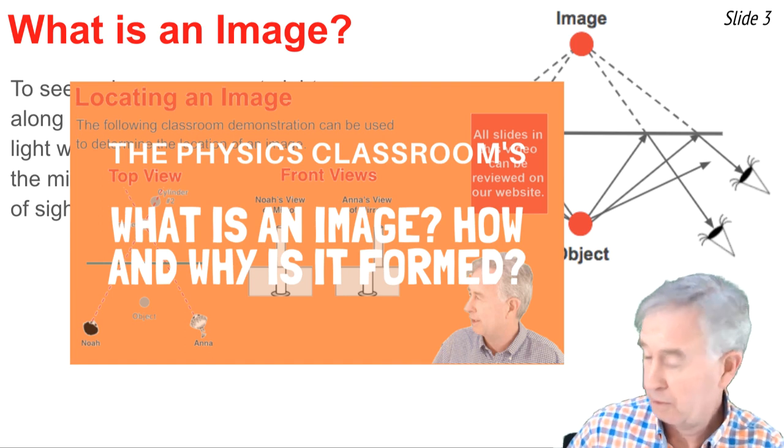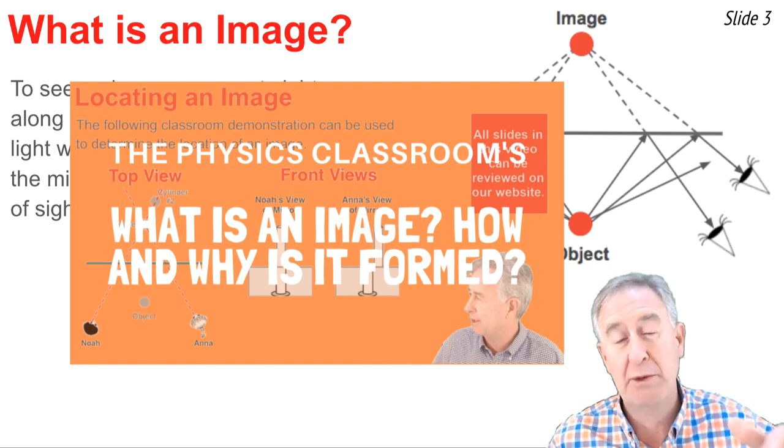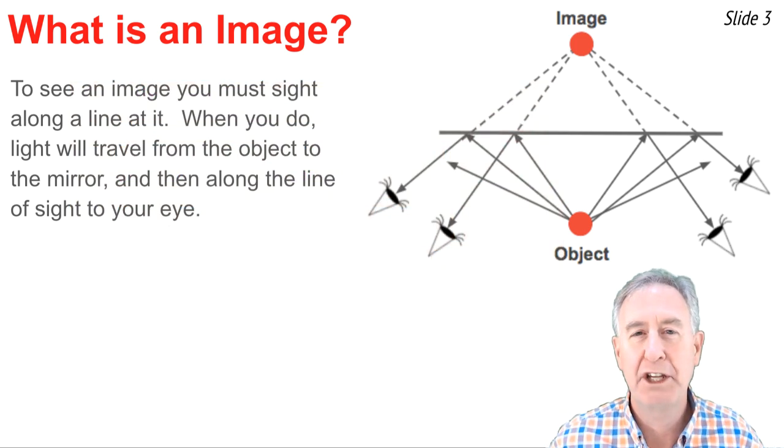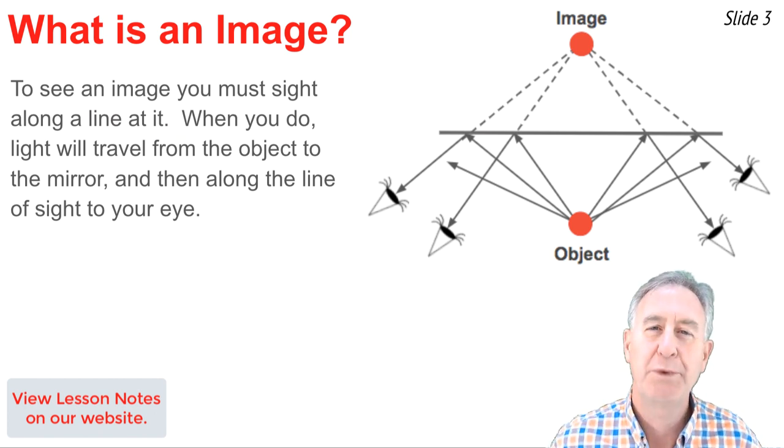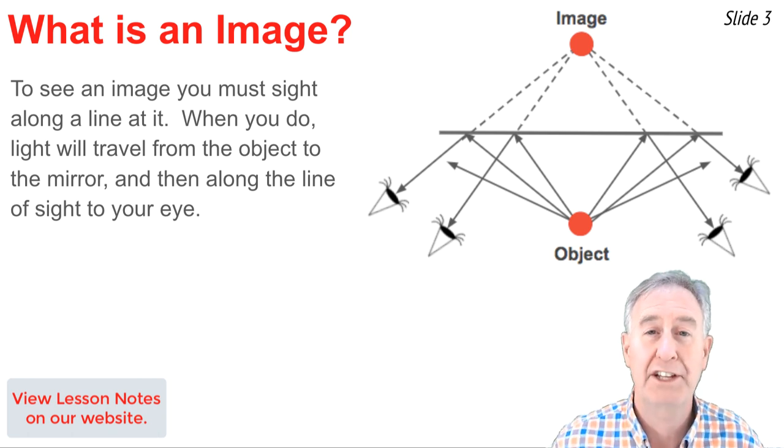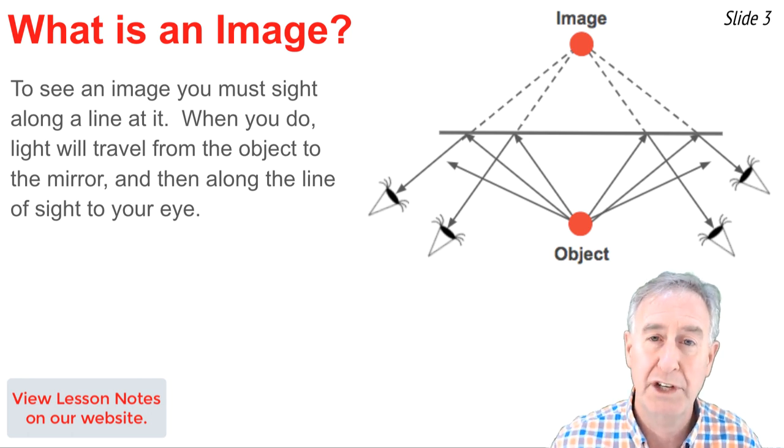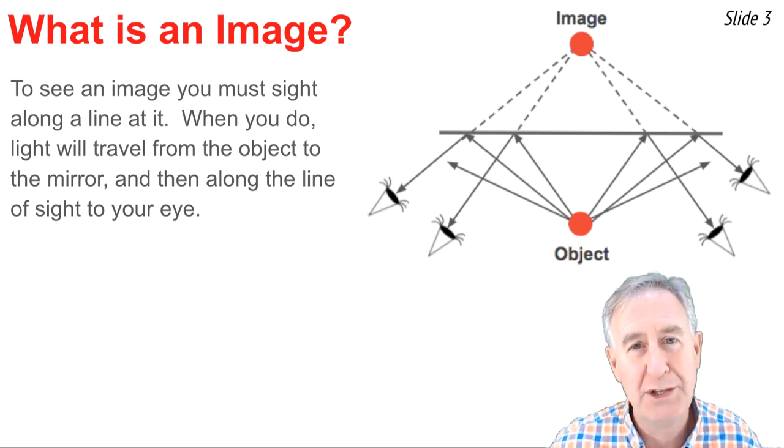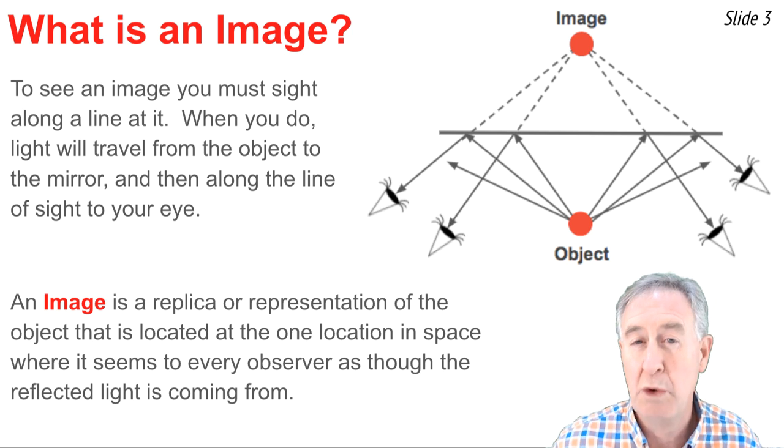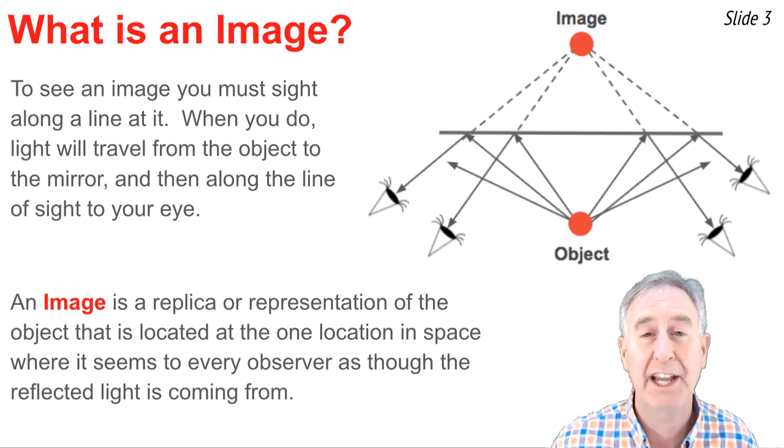In a previous video, I discussed what an image is and why it's formed. I've left a link to the video in the description section if you wish to review it. We learned in that video that in order to see an image, you must sight along a line of sight at the image location, and when you do, a ray of light will reflect off the mirror along your line of sight to your eye. If you look in the diagram, you'll notice that there are four observers, and each observer is sighting along a different line of sight but at the same image location. It's because of this that we define an image as a replica or representation of an object that's located at the one location in space where it seems to every observer as though the reflected light is coming from.